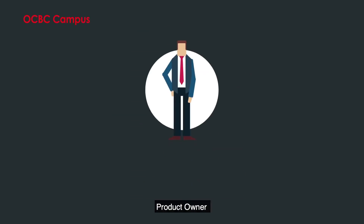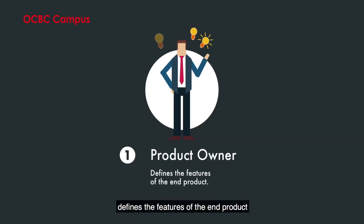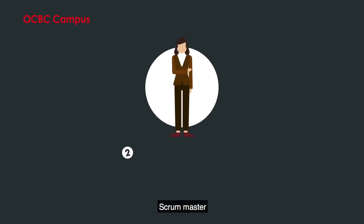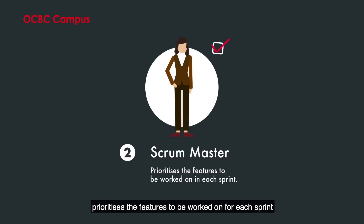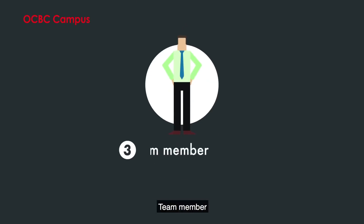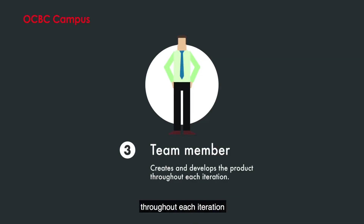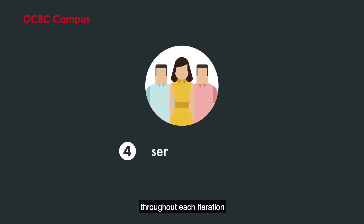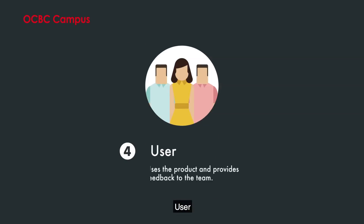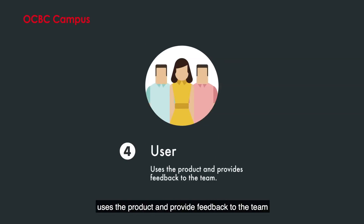The Product Owner defines the features of the end product. The Scrum Master prioritizes the features to be worked on for each sprint. The Team Member creates and develops the product throughout each iteration. The User uses the product and provides feedback to the team.